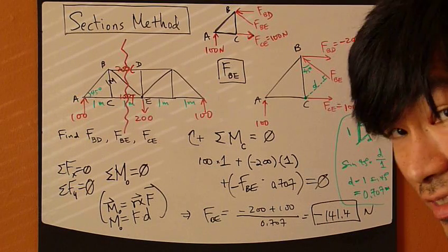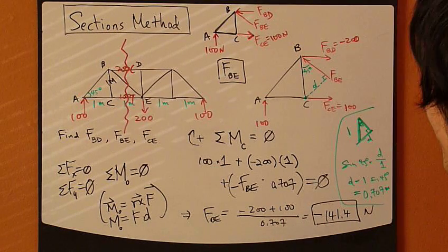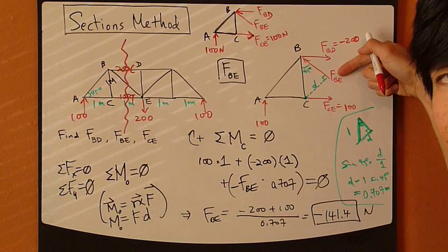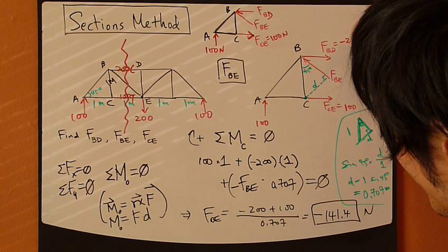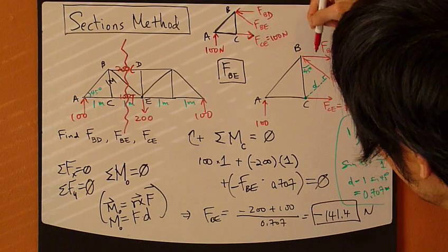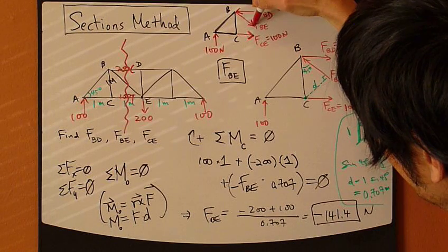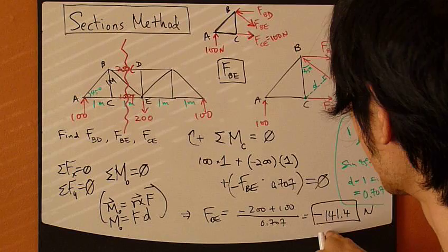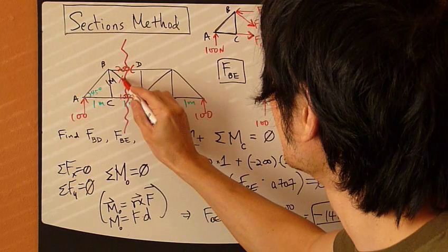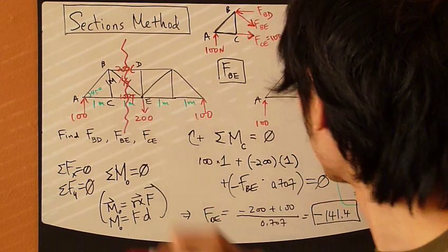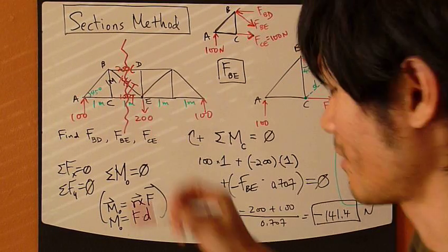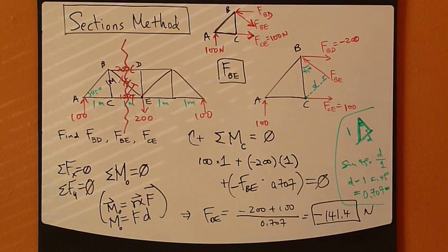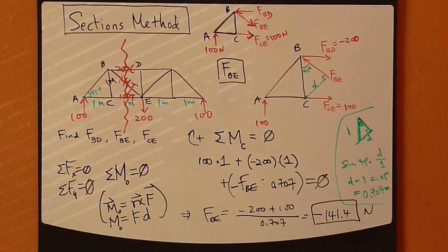A negative value means the assumed direction was incorrect. The correct direction is actually downward, pointing down. So FBE is 141 newtons. Pointing down means it's tension. That's it, that's your section method.